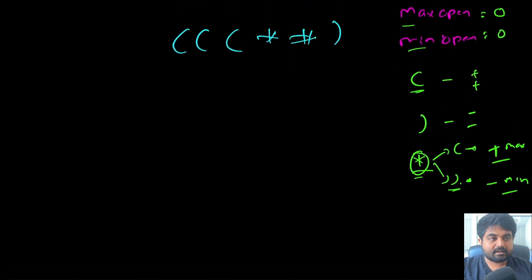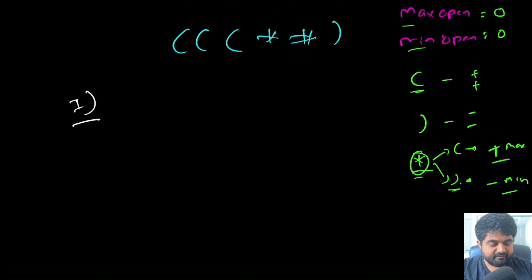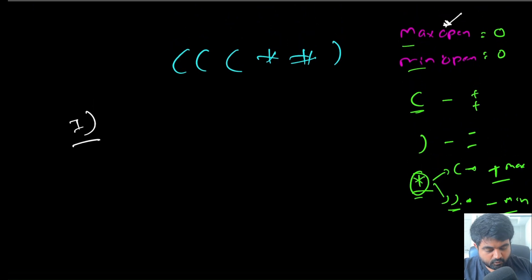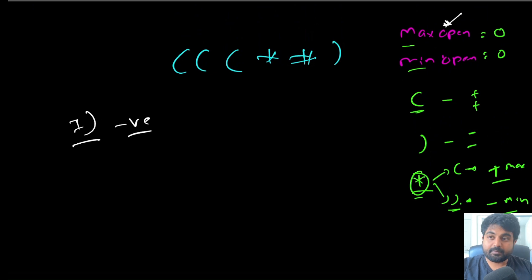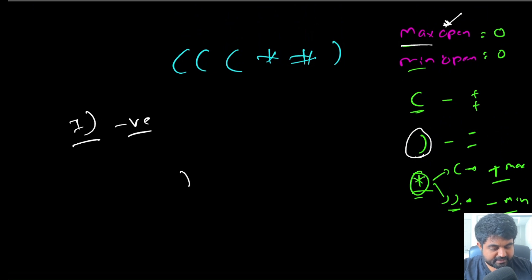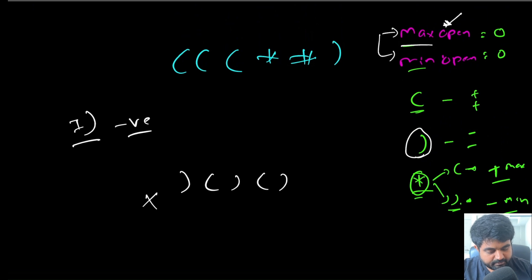There are two key conditions to handle edge cases. First, if at any point `max_open` goes negative, it means there are too many closing parentheses and not enough opens — for example, if the very first character is a closing parenthesis. In that case we can immediately return false, because no star configuration can fix this.